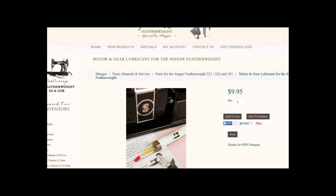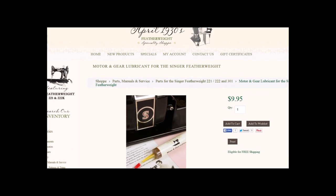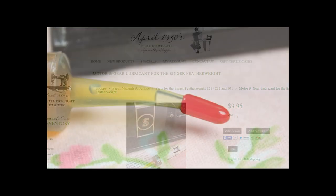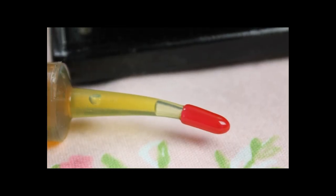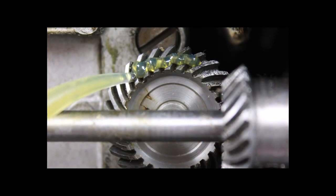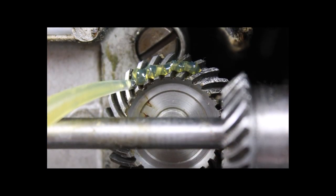Our new sewing machine motor and gear lubricant is now available for sale on our website. It comes in a curved tip syringe that works excellent for lube placement, as well as being economical in that there is minimal waste.